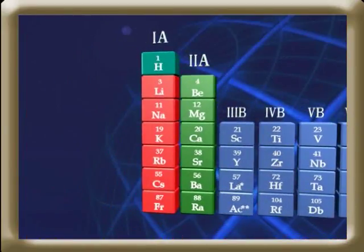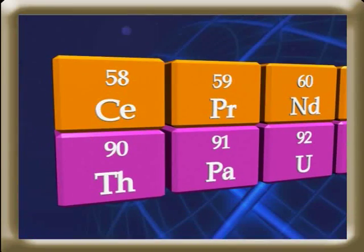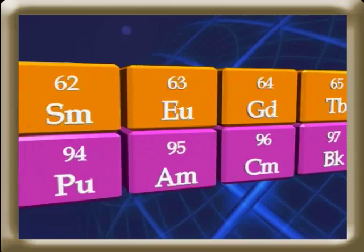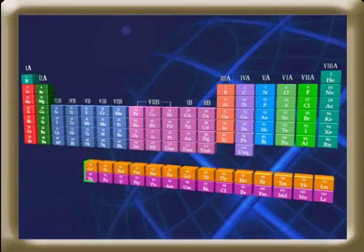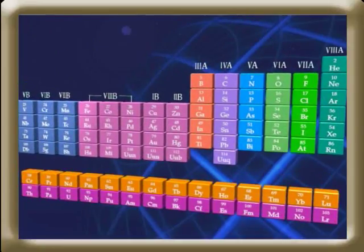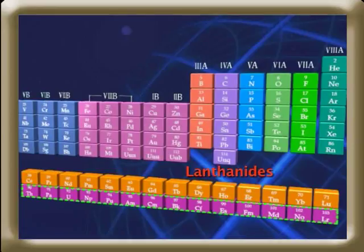Looking at the modern periodic table, lanthanides and actinides are not accommodated in the main body of the periodic table but are placed separately at the bottom. The sixth period consists of elements with atomic numbers 58 to 71 — they are called lanthanides. The seventh period consists of elements with atomic numbers 90 to 103 — they are called actinides.